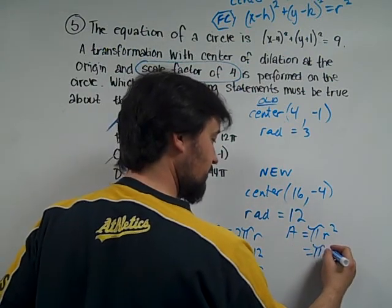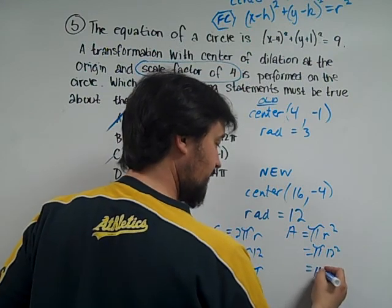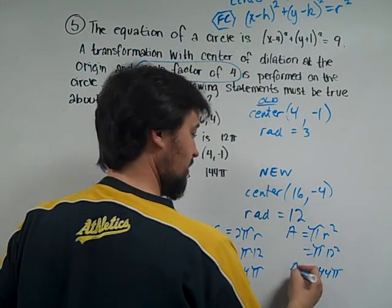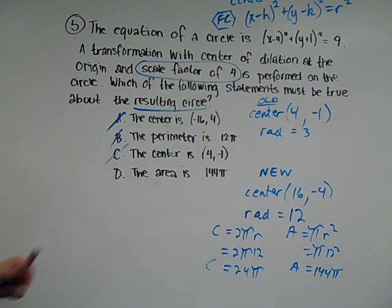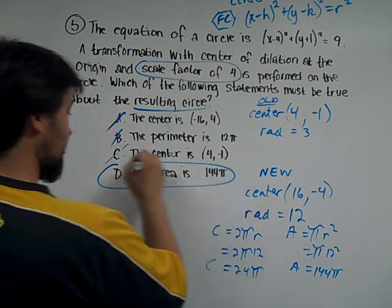And our area is 144π. So the perimeter is not going to be 12π, it's going to be 24π. The area will be 144π. And there's our answer.